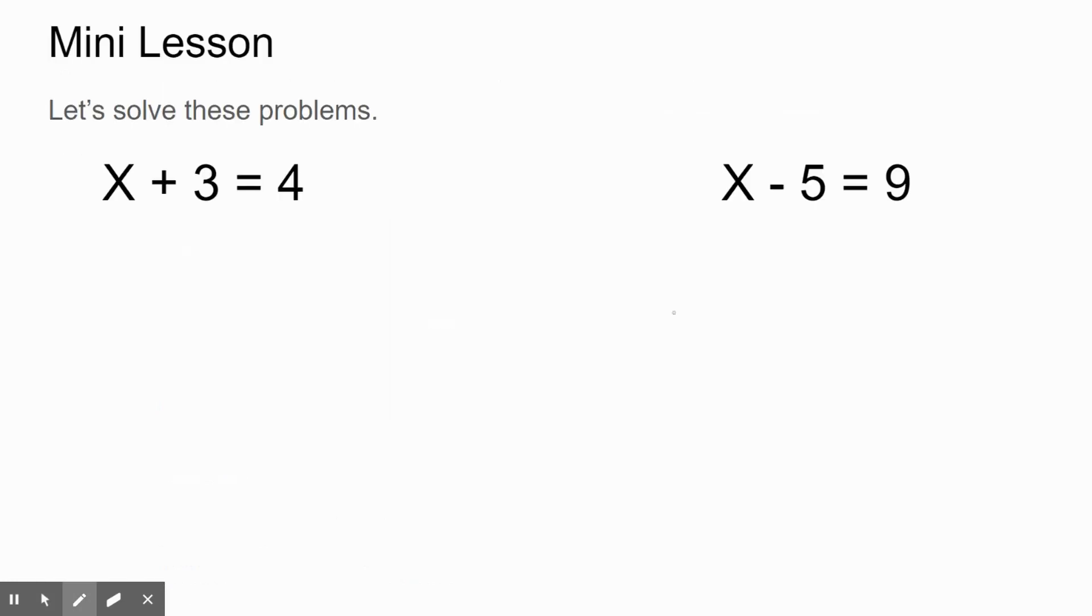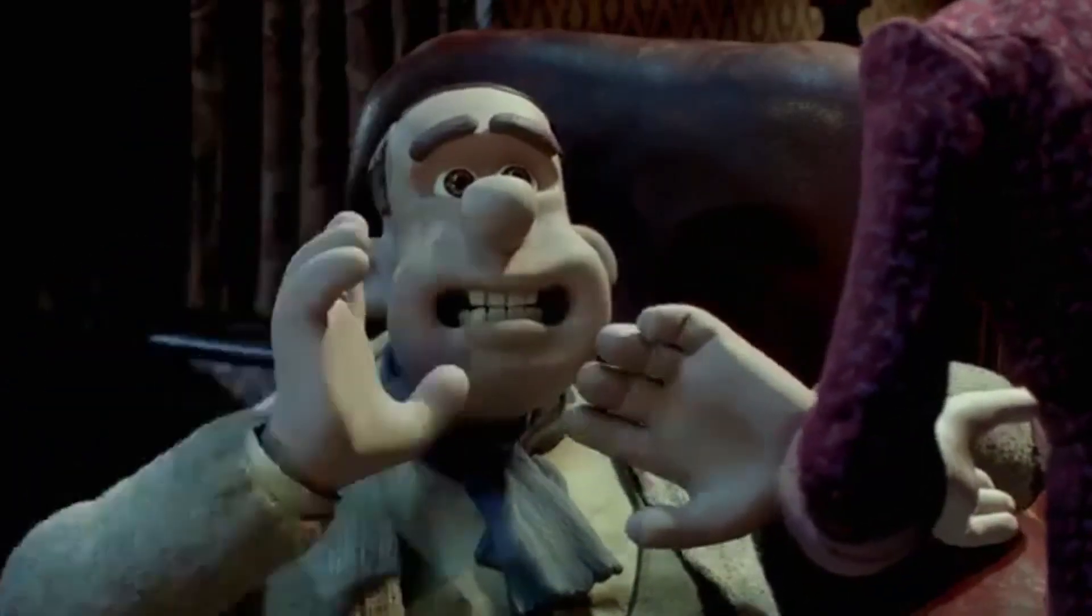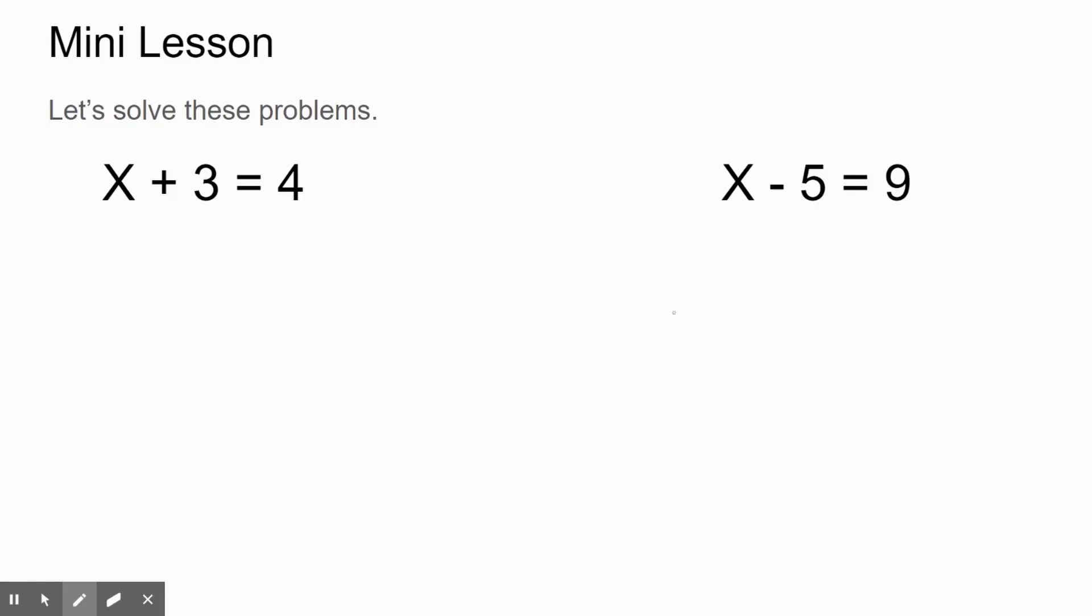We have two problems here. The first one is x plus 3 is equal to 4, and the second one is x minus 5 is equal to 9. We're going to go through both of these, showing all of our work. Now, there's a good chance that with especially that first one, you could look at it and immediately know what x is. It's all in my head. And that's great. That shows that you have a pretty good understanding of how math works, but we still want to make sure that we show all of our work. Whenever we deal with a problem like this, our goal is going to be to isolate the variable, to get the variable by itself.